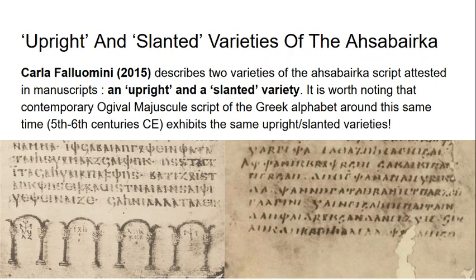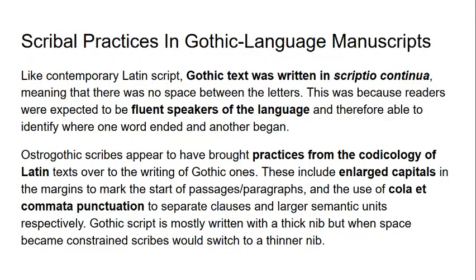Carla Falomini in 2015 described two varieties of the Achseberka script: an upright variety, seen in the Codex Argenteus, and a slanted variety, seen in Codex Ambrosianus B. Interestingly, contemporary Greek uncial scripts of the fifth and sixth centuries CE also had upright and slanted varieties, so Ostrogothic scribes may have been influenced by contemporary Greek uncial scripts in the production of their own manuscripts.